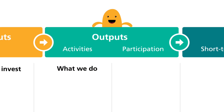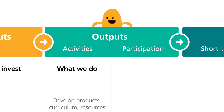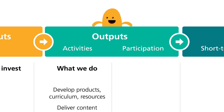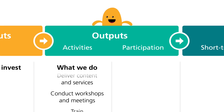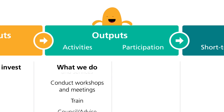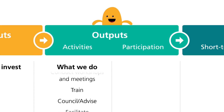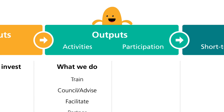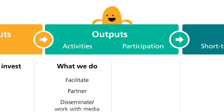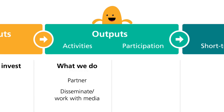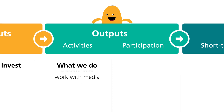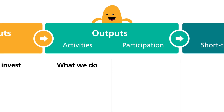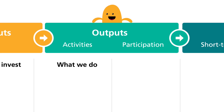Activities are what we do. They are what the program does with the resources in order to achieve outcomes. Our activities should be specific enough to understand how our outcomes will be achieved. To make your logic model as clear as possible, use a separate box for each different activity.